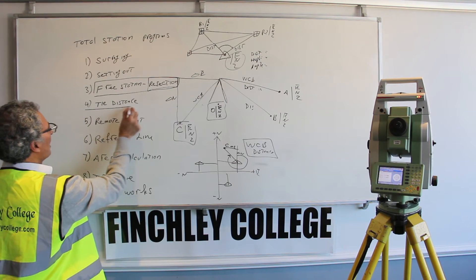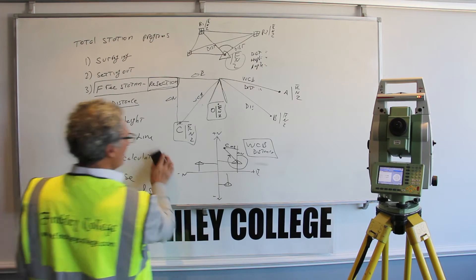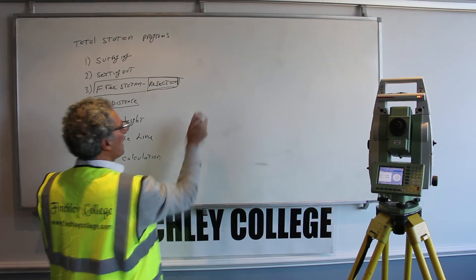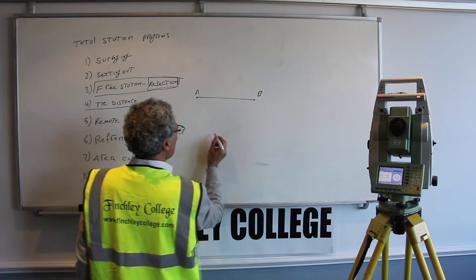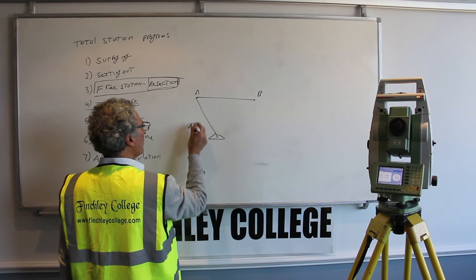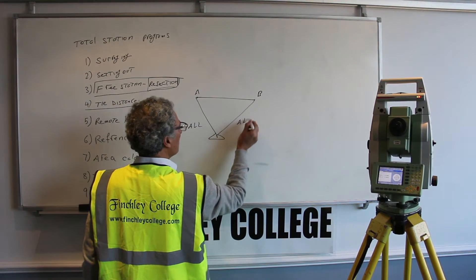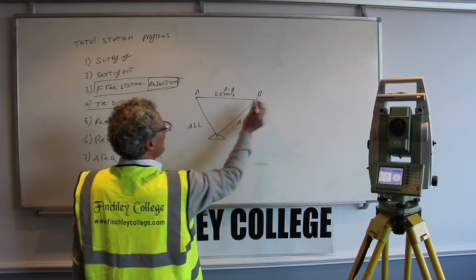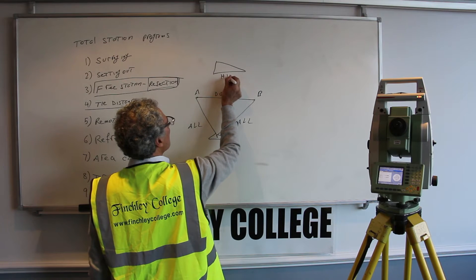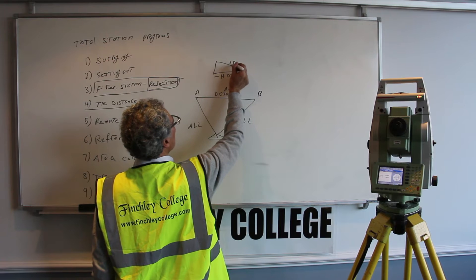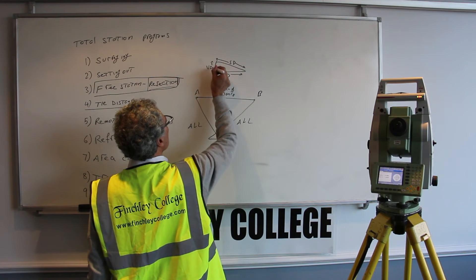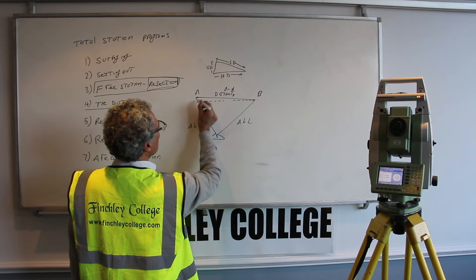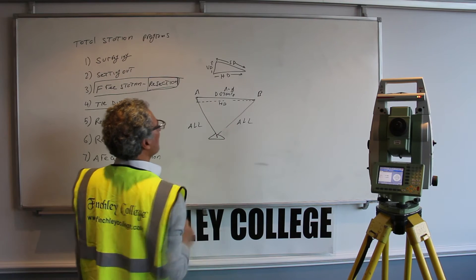The next popular program is the tie distance program. With tie distance, you work out the distance between two points. You have a point A and a point B; you can set up here, sight to A and press measure, then sight to B and press measure. The instrument will calculate the distance between A and B. It will show you the horizontal distance, the slope distance, and the vertical distance — all three between A and B.